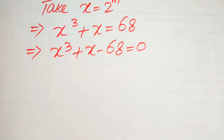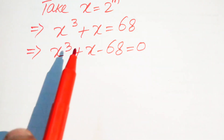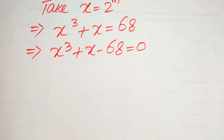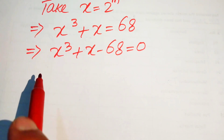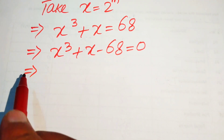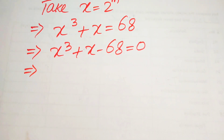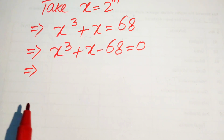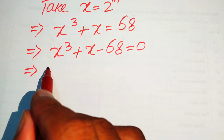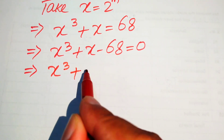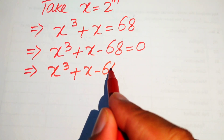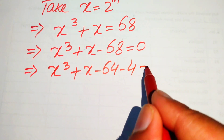There are many methods to solve this cubic equation, such as synthetic division or finding the factors of 68. We break minus 68 and write it as x cubed plus x minus 64 minus 4 equals 0.